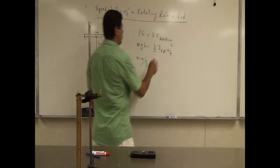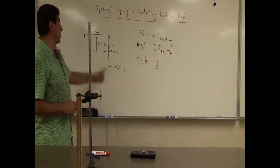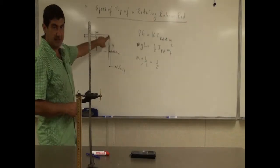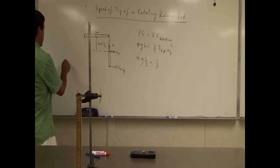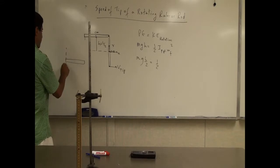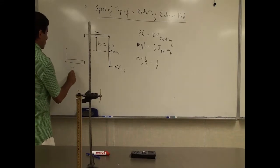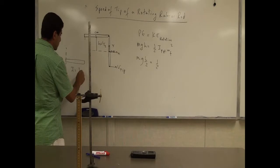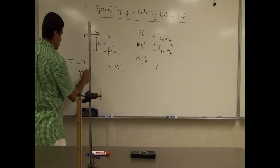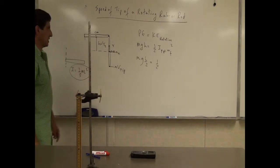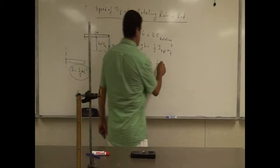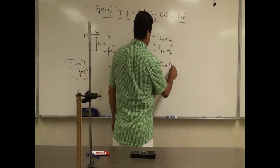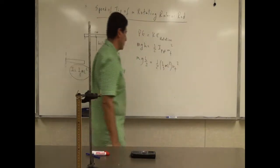Then we ask: what is the moment of inertia of a rod or ruler pivoted about the end? The moment of inertia about an axis through the end for a uniform density ruler or rod is one-third mL squared. So we use that moment of inertia — one-third mL squared times omega final squared.